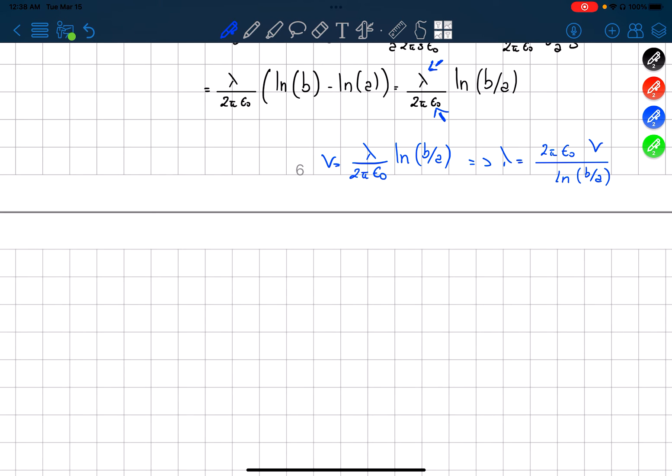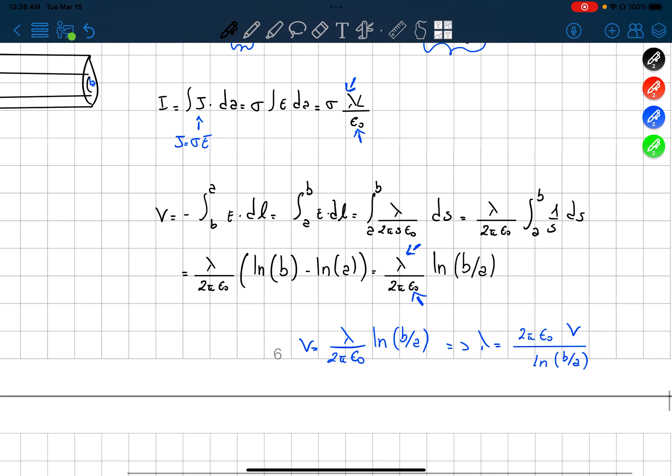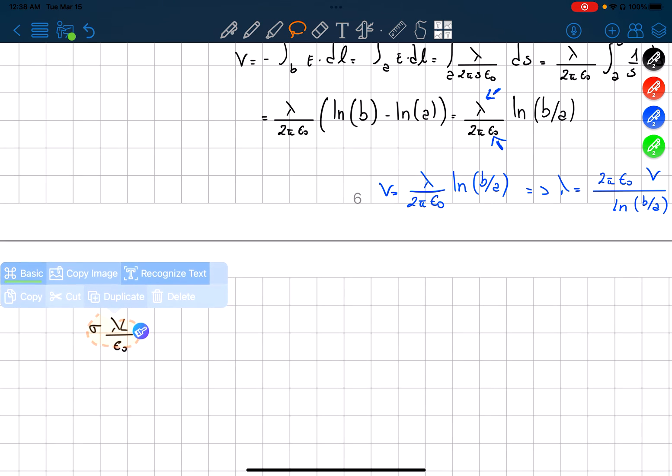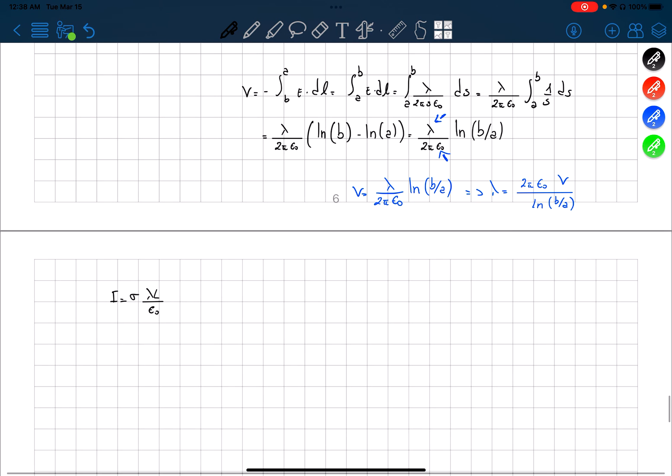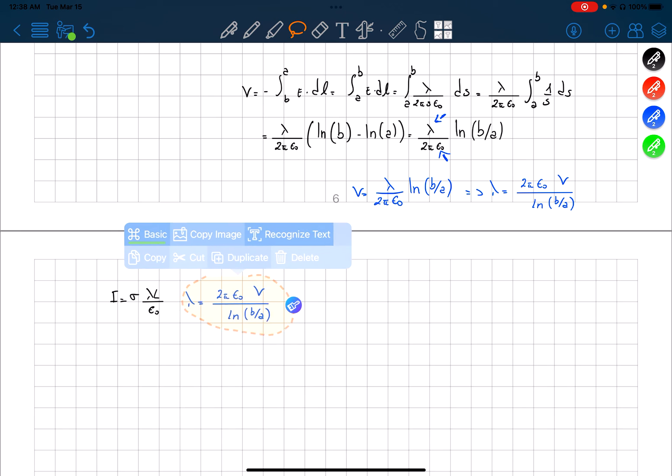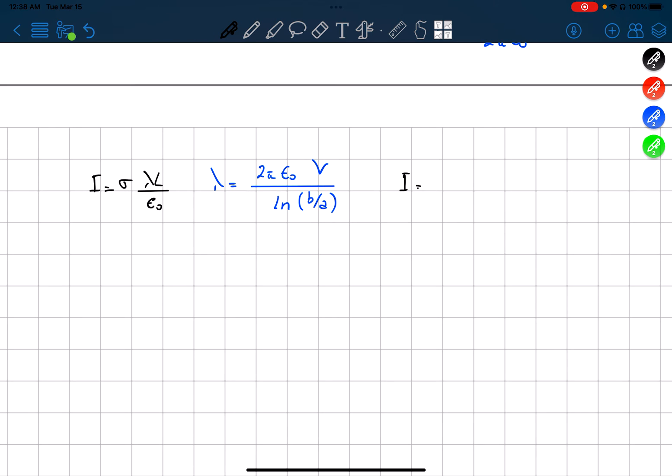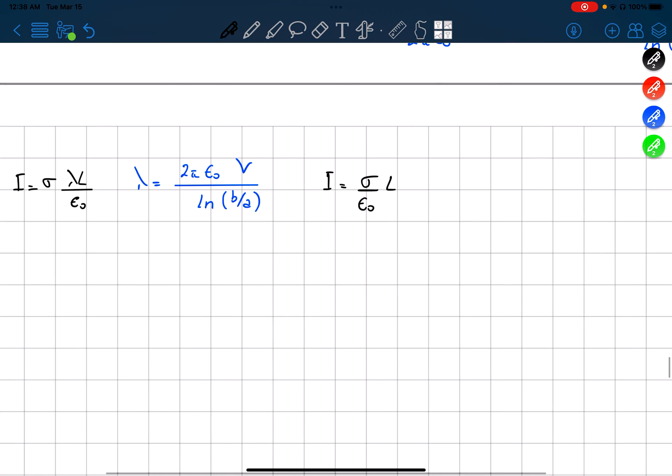If we substitute this in our current equation, which was this one over here, with this substitution to make, we get the current is equal to our constant over epsilon nought times L, and then 2π epsilon nought. Now you can see why I wanted to substitute epsilon nought. And then V over ln of B over A. So here we can solve this part over here.